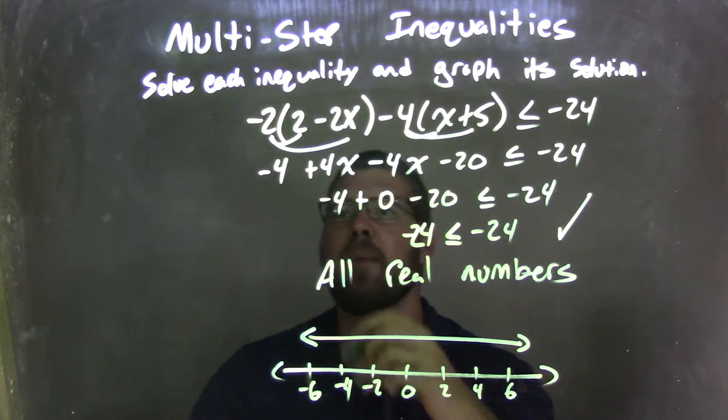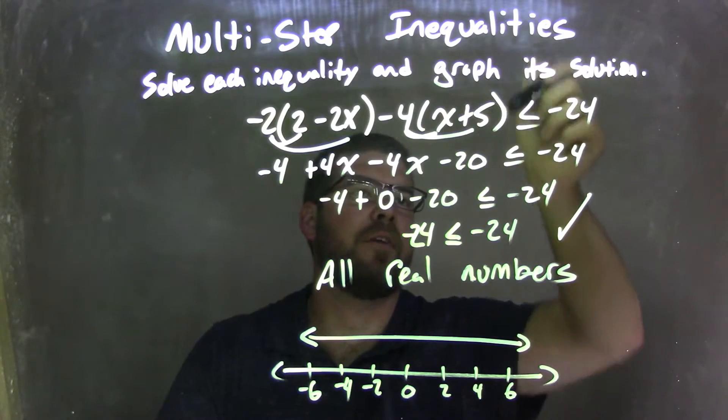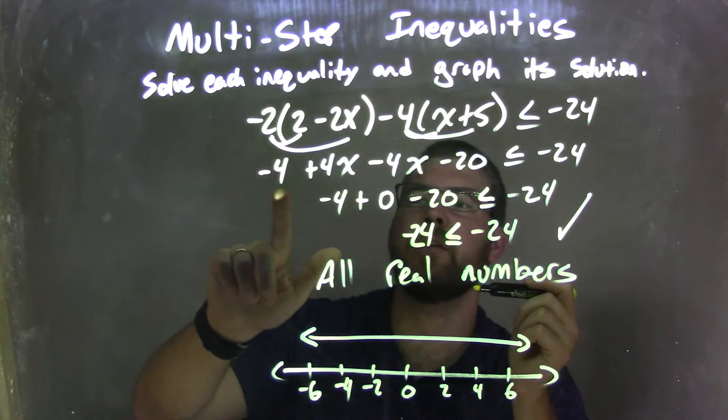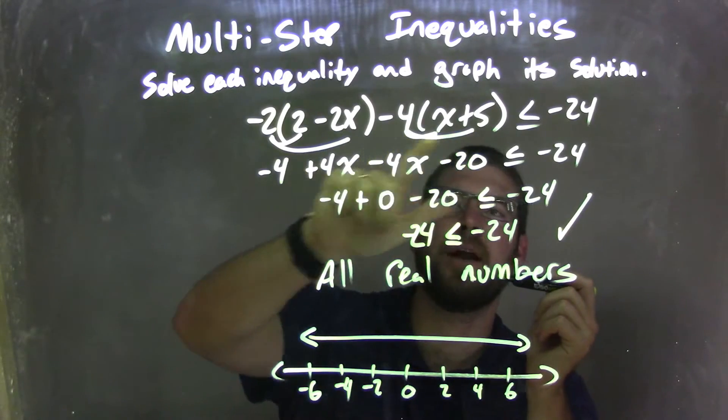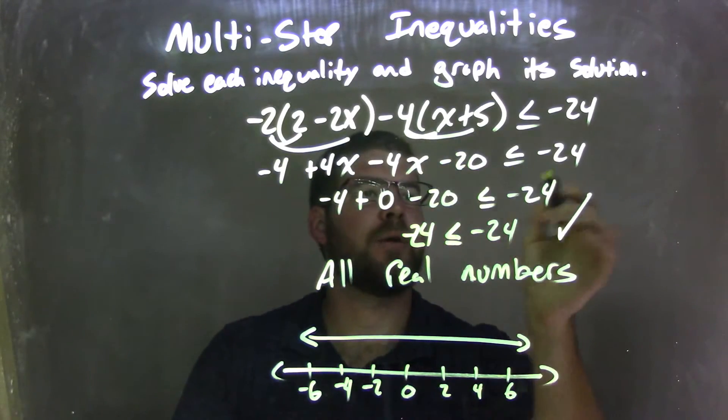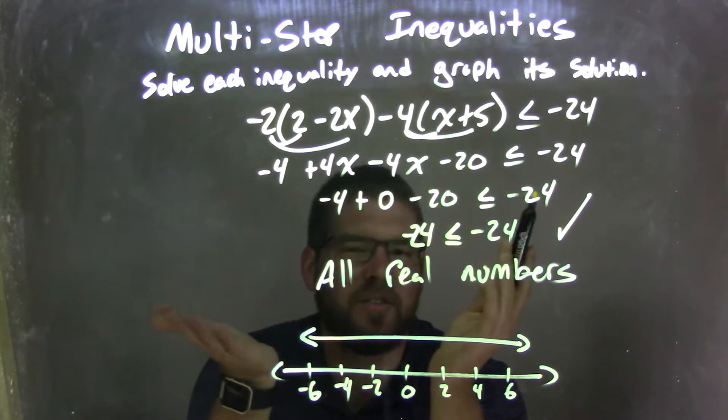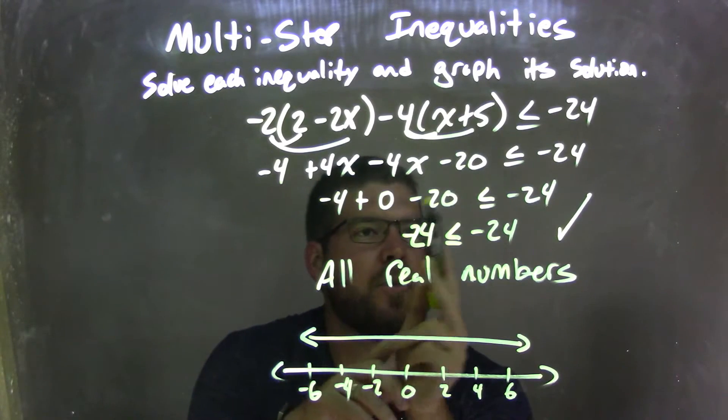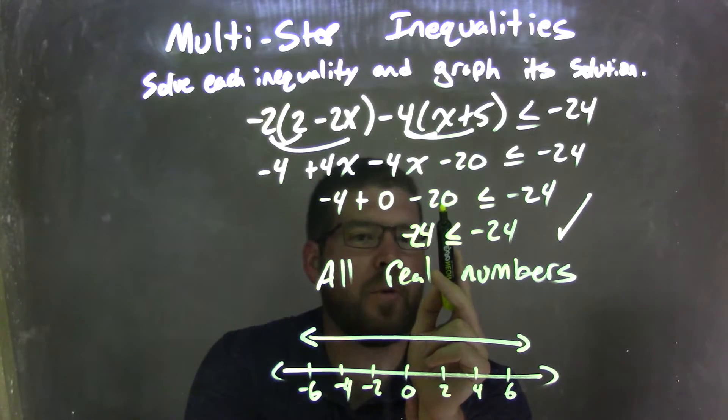So let's recap. We're given negative 2 in parentheses, 2 minus 2x in parentheses, minus 4 times in parentheses, x plus 5 in parentheses, less than or equal to negative 24. I distributed both of them, giving me negative 4 plus 4x minus 4x minus 20. Make sure you bring that minus distribute to both parts. It is less than or equal to negative 24. I now combined the 4x and minus 4x, giving 0. So now I have negative 4 plus 0 minus 20 is less than or equal to negative 24. I then combine negative 4 and negative 20, giving me negative 24.